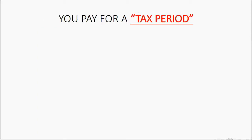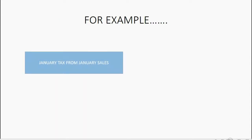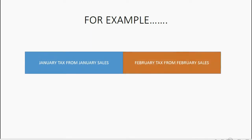You pay for a tax period. The due date of the payment is always after the end of the tax period. For example, you have January tax from January sales, then in the next month you have February tax from February sales.